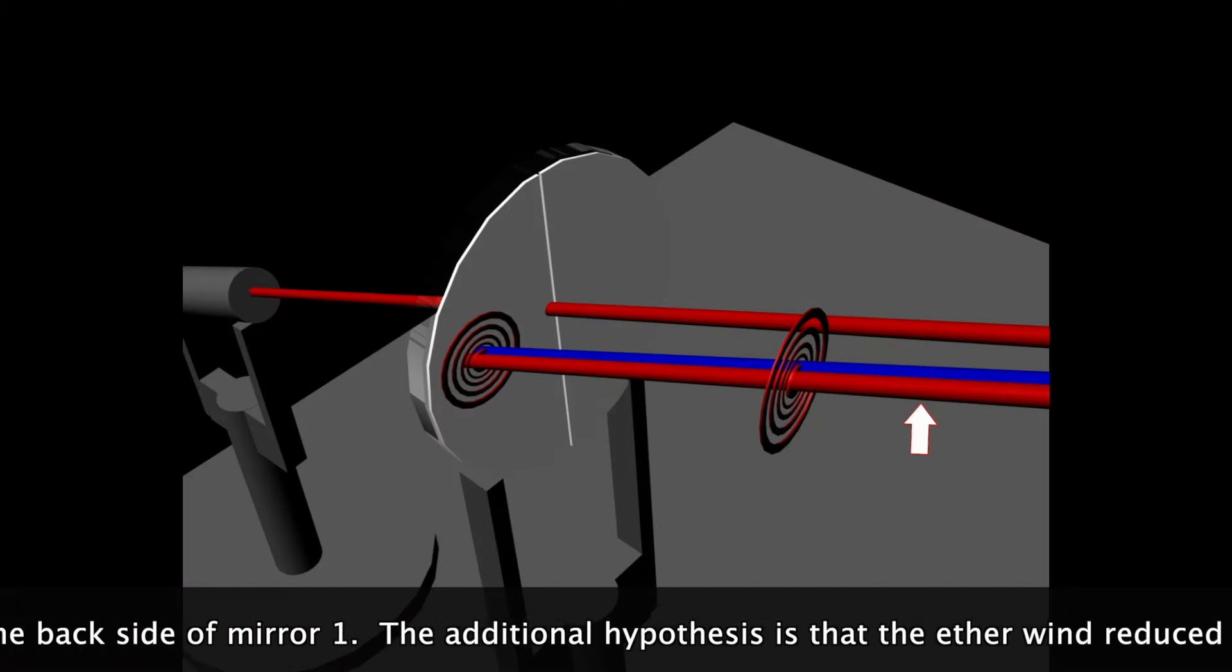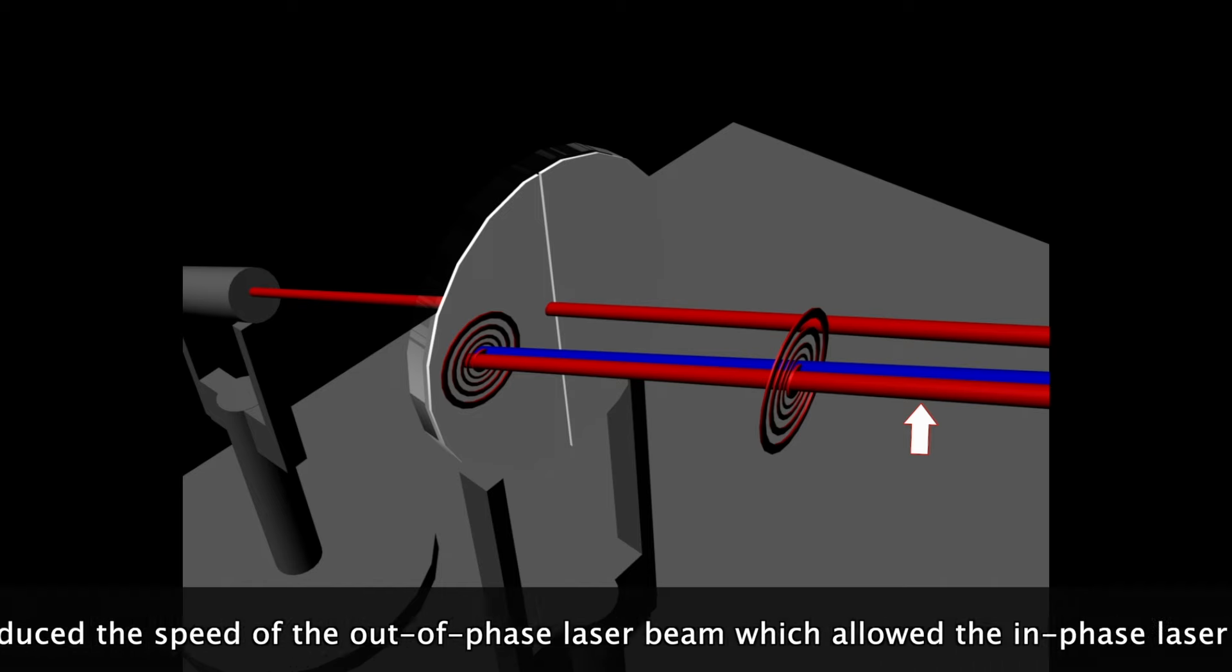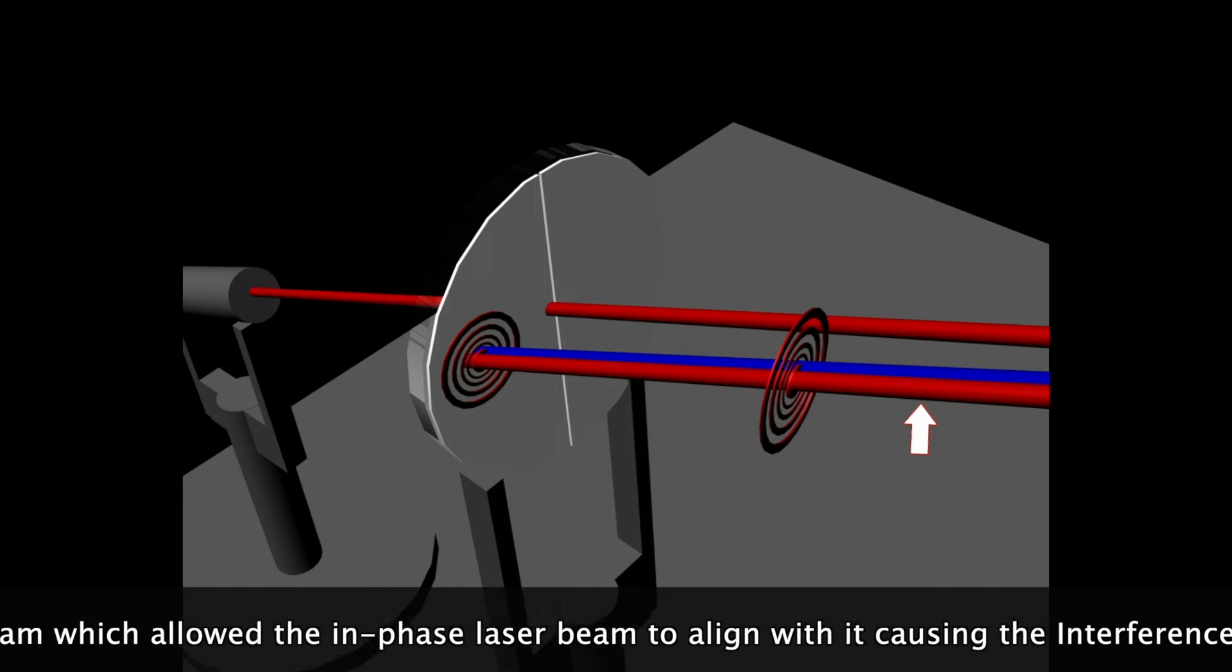The additional hypothesis is that the ether wind reduced the speed of the out of phase laser beam which allowed the in phase laser beam to align with it causing the interference pattern.